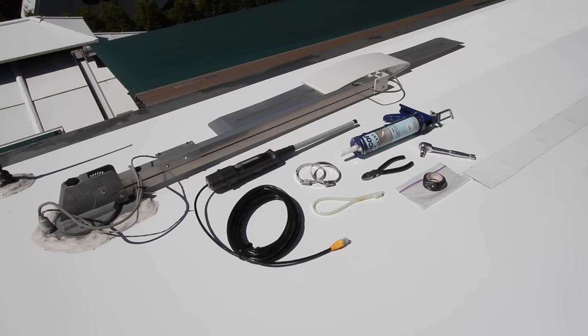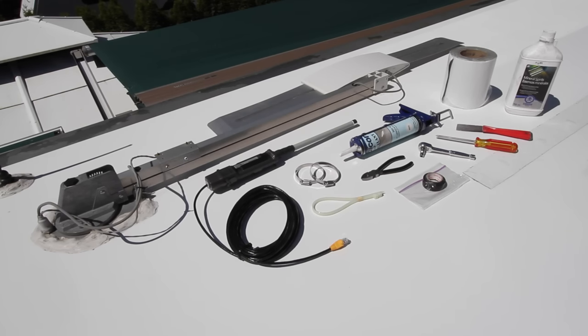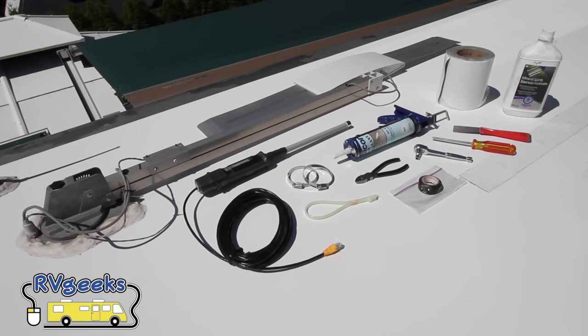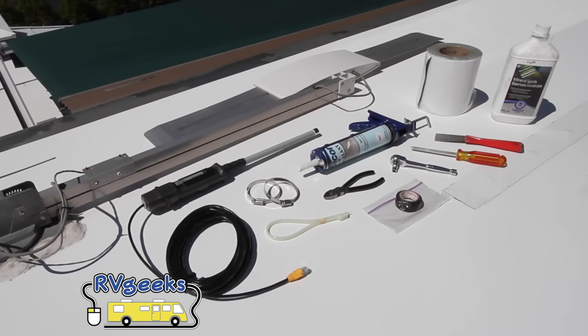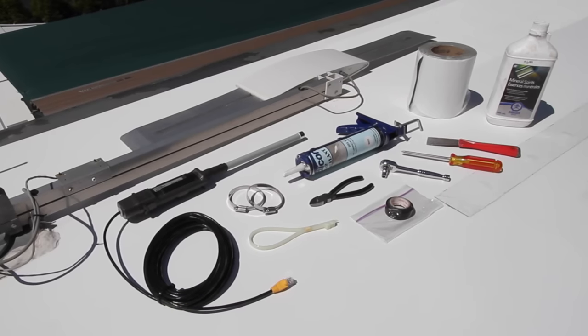We'll need a socket wrench or a phillips head screwdriver, a putty knife, Eternabon tape and mineral spirits. To keep things neat and tidy we'll also be adding some additional cable ties plus we'll need a few paper towels and a pair of nitrile gloves.